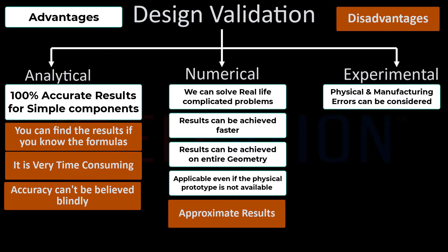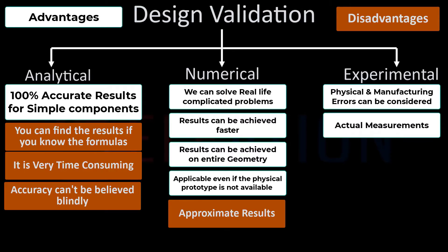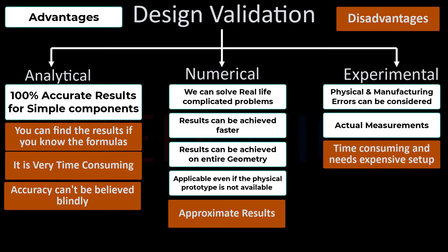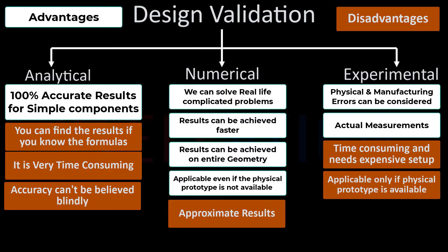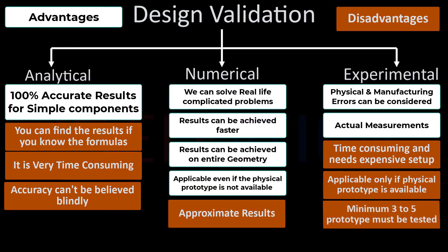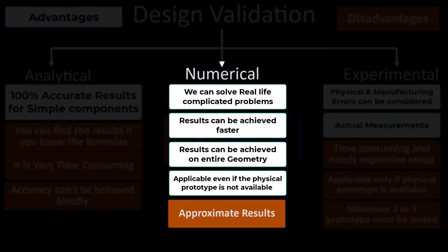Experimental method: this method can consider physical or manufacturing errors during testing, yielding more accurate results. However, it is time-consuming and requires expensive setups. It can only be used if you have a physical component and necessitates testing a minimum of three to five components of the same product to finalize the results. Given the disadvantages inherent in both the analytical and experimental methods, over 30,000 companies prefer using the numerical method to validate their products.